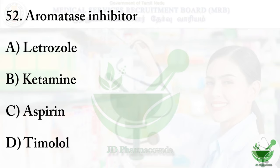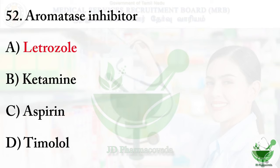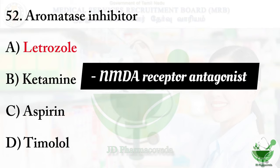Question number 52: Aromatase inhibitor. The options are: option A, Letrozole; option B, Ketamine; option C, Aspirin; option D, Timolol. The right option is option A, Letrozole. Ketamine is a dissociative anesthetic drug used for induction and maintenance of anesthesia. It is also used as a treatment for depression and in pain management, and it acts on the NMDA receptor as an antagonist.